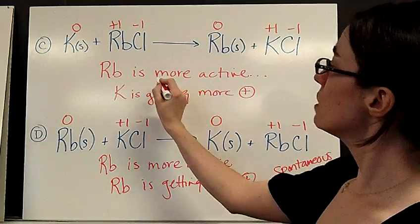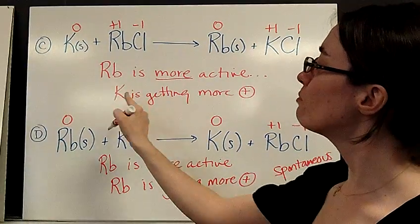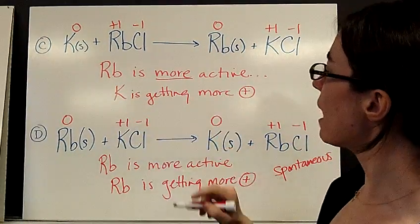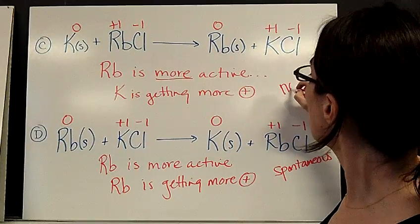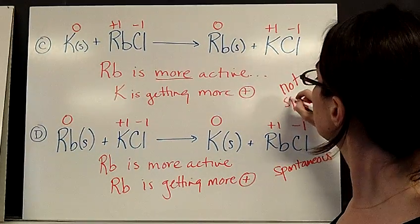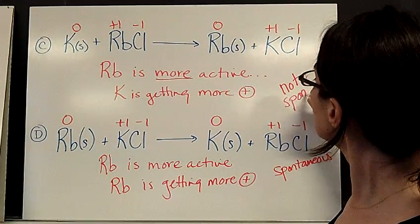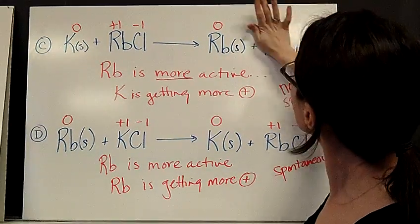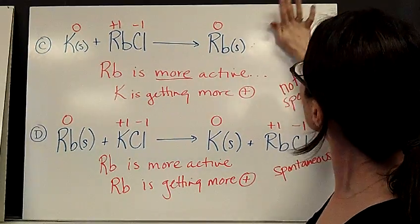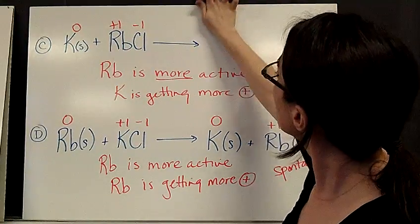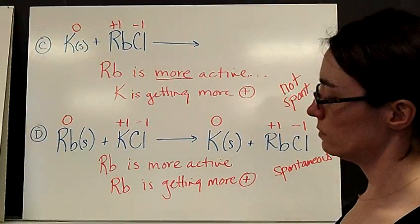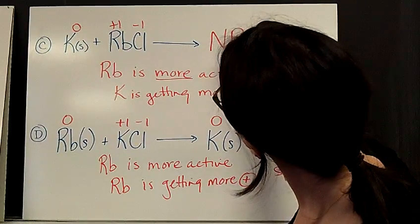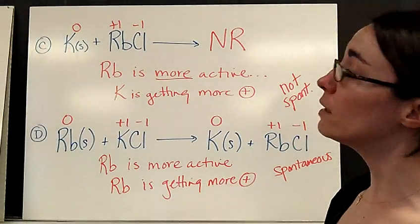But since rubidium is more active and it's the K — the less active metal — that's getting more positive in the first reaction, that one is not spontaneous. So we can get rid of those products, because they will not happen.